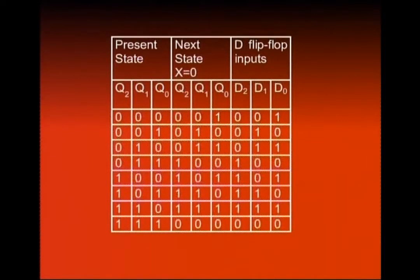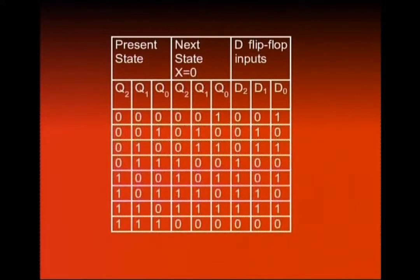Kyunke D flip-flop use kar rahe hain, toh jo D flip-flop ka input table hai woh bahut simple ho jaata hai as compared to JK flip-flop input table. D flip-flop inputs D0, D1, D2 represent karte hain D flip-flop ke inputs. Yeh information jab D flip-flop ke inputs pe apply karenge, Q0, Q1, Q2 next state pe information aa jaegi, jo next state columns mein di gayi hai.